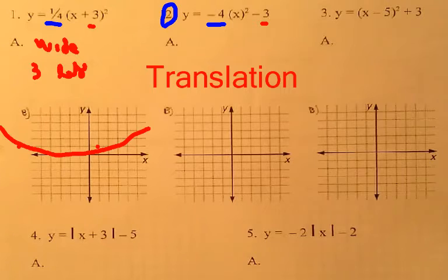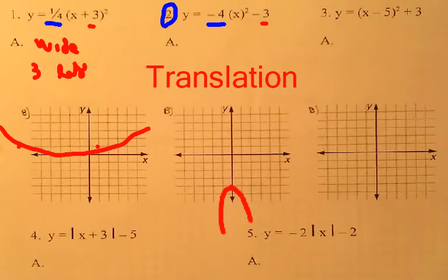Negative three, that means you're going down three, one, two, three, and it's upside down. And it's skinny. So, it looks like this.